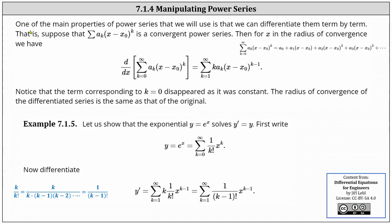One of the main properties of power series that we will use is that we can differentiate them term by term. Suppose we have a convergent power series. Then for x in the radius of convergence, we have the derivative of the power series given by the sum from k equals zero to infinity of a sub k times the kth power of the difference of x and x sub zero, equals a sum from k equals one to infinity of k times a sub k times the k minus one power of the difference of x and x sub zero. Notice to differentiate with respect to x, we multiplied by k and then subtracted one from the exponent.